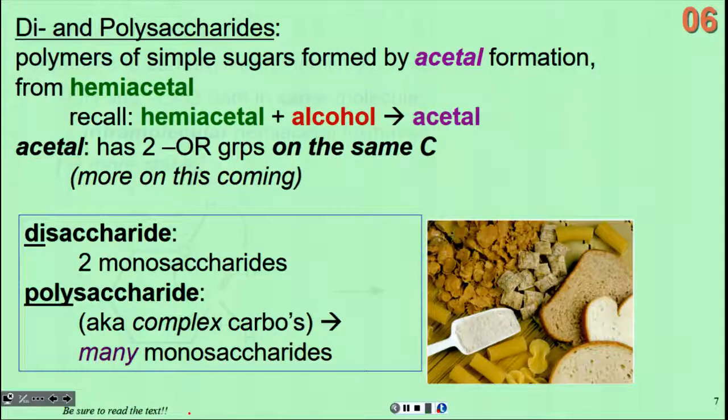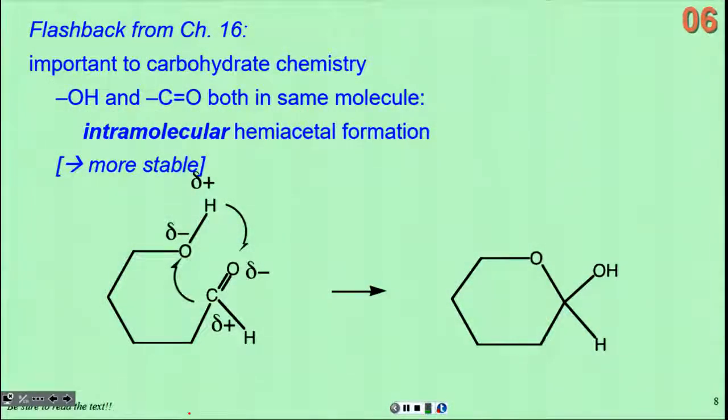Just as a reminder, how do these hemiacetals and acetals come about? This was a review from our chapter on aldehydes and ketones, which I guess is actually chapter 15 in this current textbook. It's important in carbohydrate chemistry because there's OH groups, alcohol groups, and carbonyls in the same molecule.